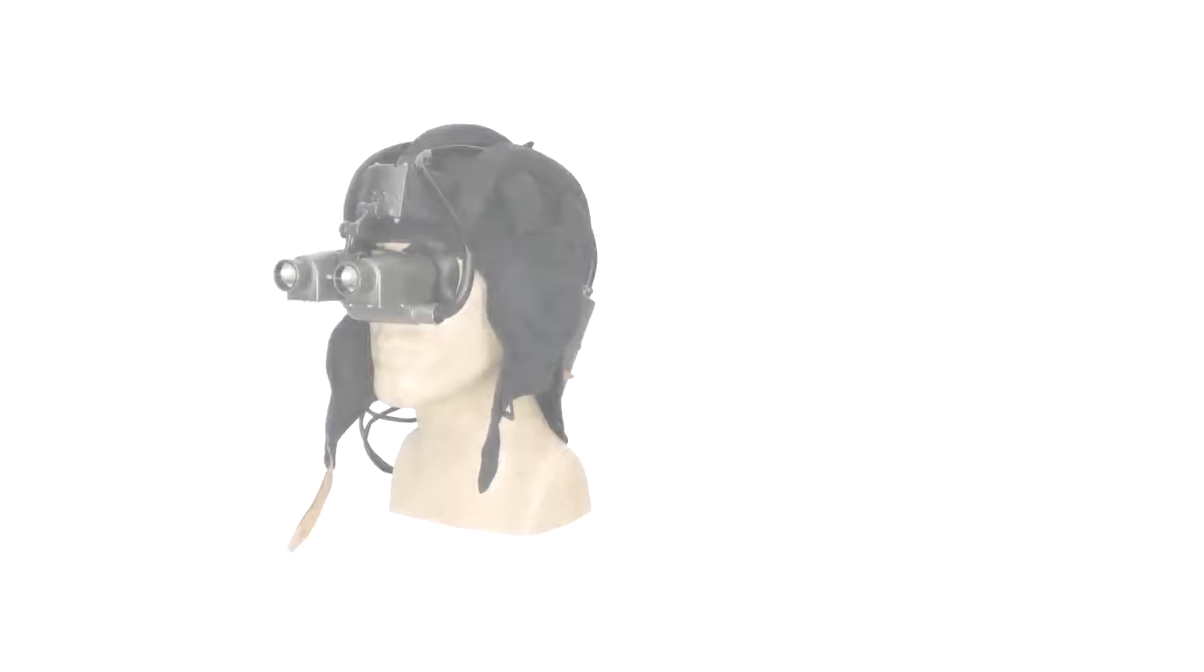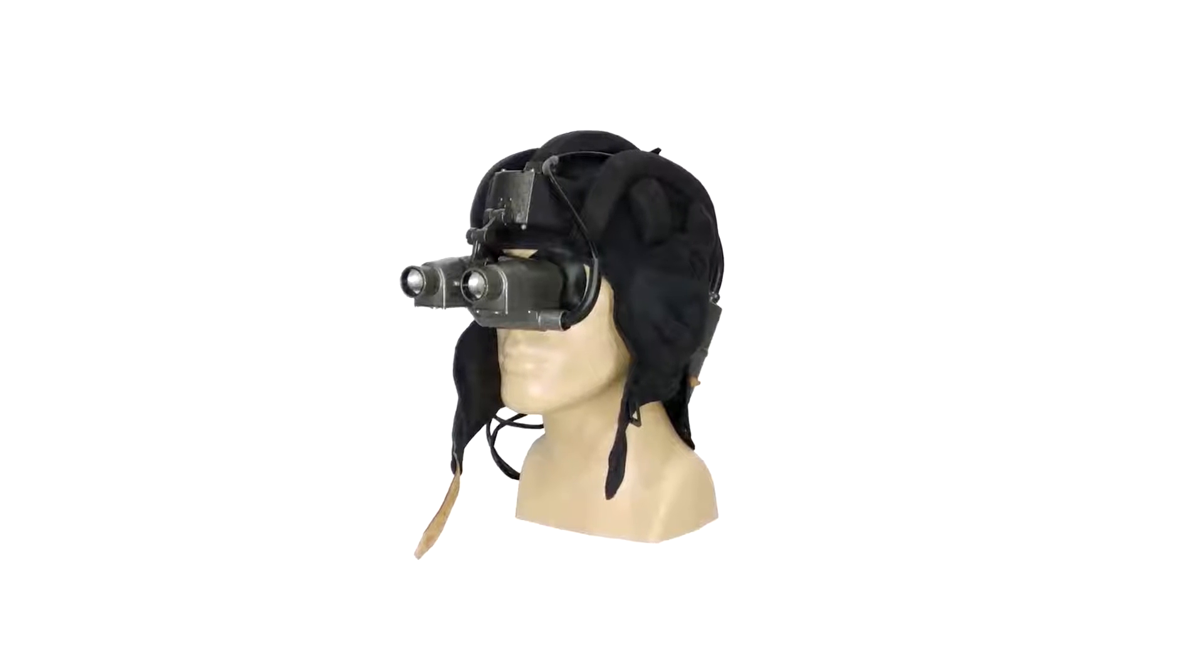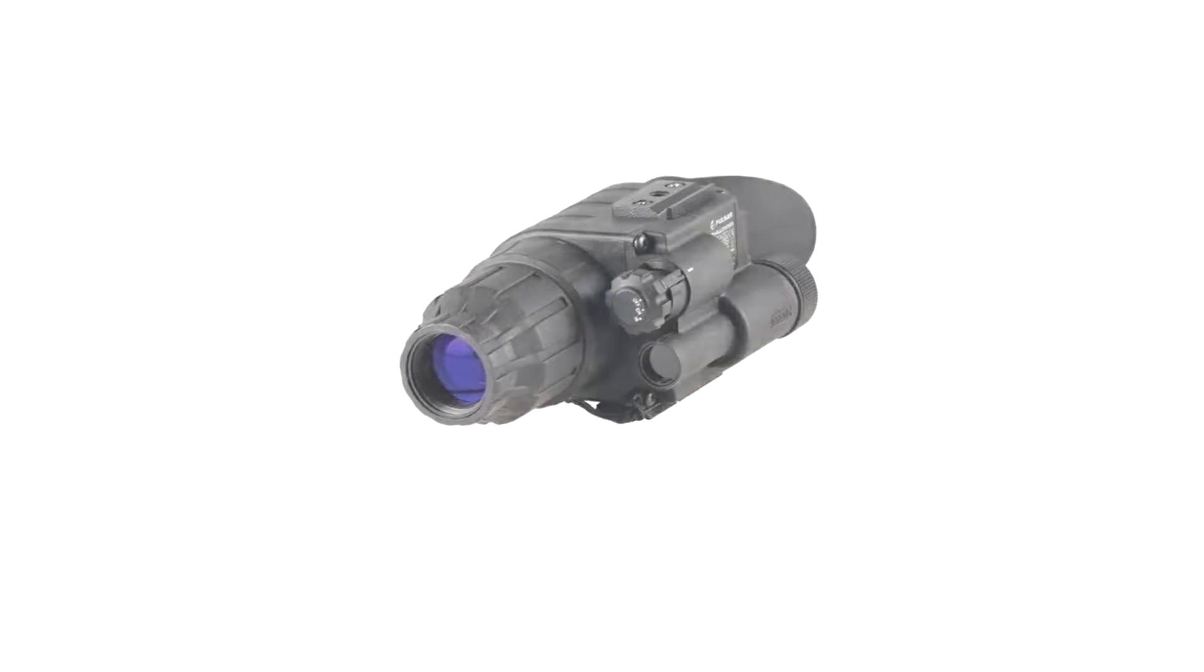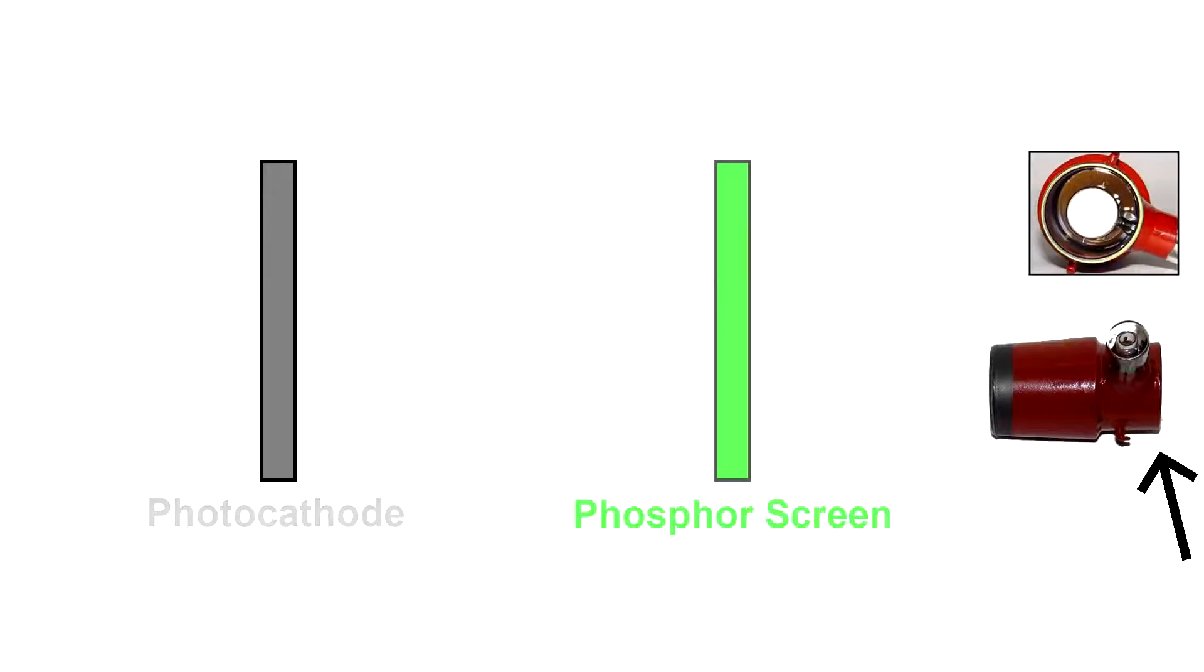Now, we're going to be skipping over Gen 0 and Gen 1 devices because those devices typically do not have any high light protection mechanism. The typical Gen 0 and Gen 1 tube only really has two basic components: the photocathode and the phosphor screen.